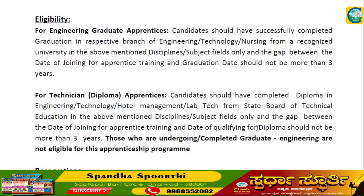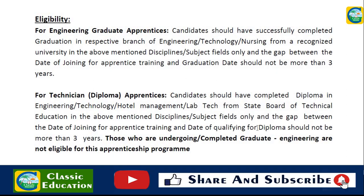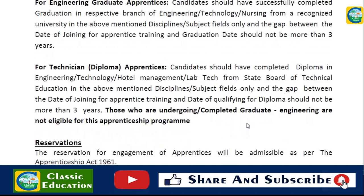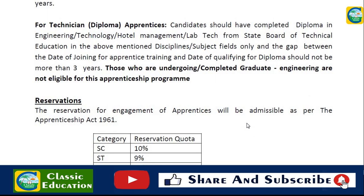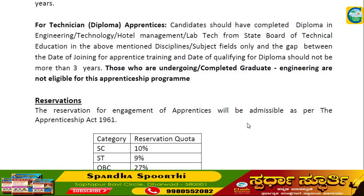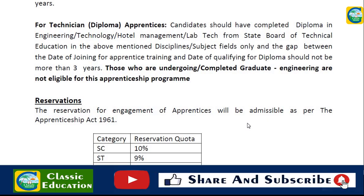Eligibility for Engineering Graduates: Candidates should have successfully completed graduation in the respective branch of Engineering, Technology, or Nursing from a recognized university in the above-mentioned disciplines only. The gap between the date of commencement of Apprentice training and graduation date should not be more than 3 years. For Diploma Technicians: candidates should have completed a Diploma in Engineering, Technology, Hotel Management, or Lab Technology from the State Board of Technical Education, and the gap between apprentice training and the diploma qualification date should not be more than 3 years.